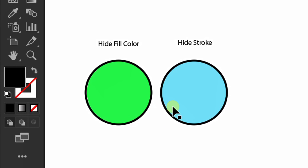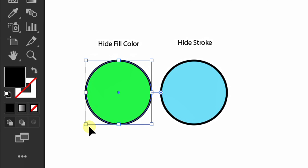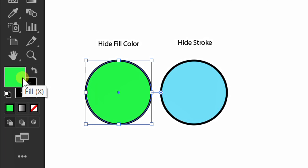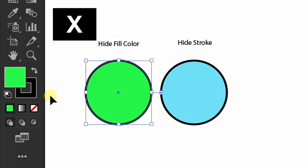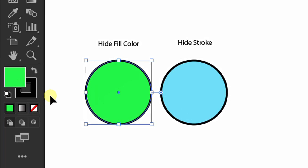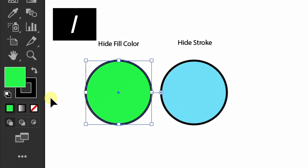Here I have prepared a simple object that contains a color and a stroke. First, how to remove the fill color. Object selection. See this tool. Position the fill color at the top. You can switch positions by pressing X. After that, hit the slash.